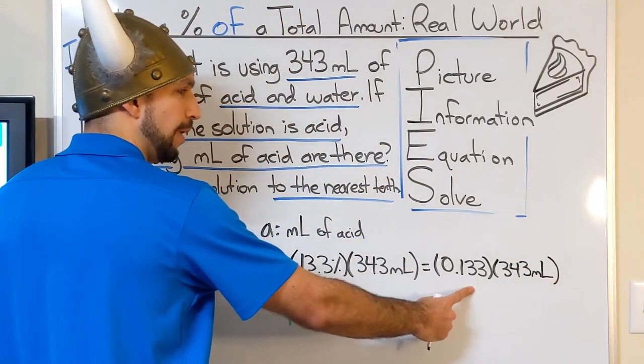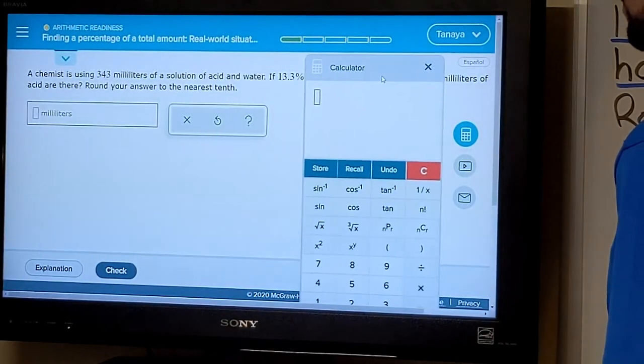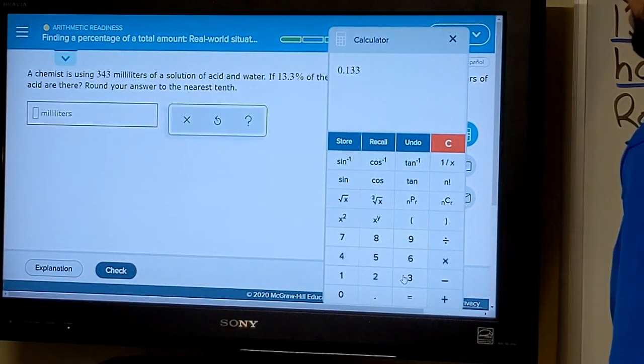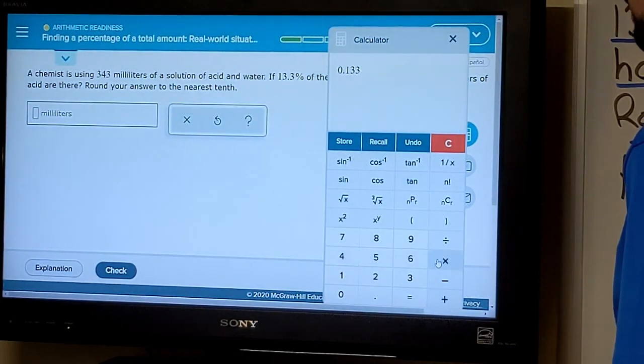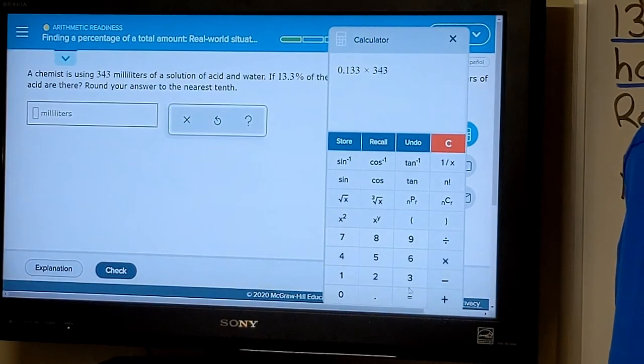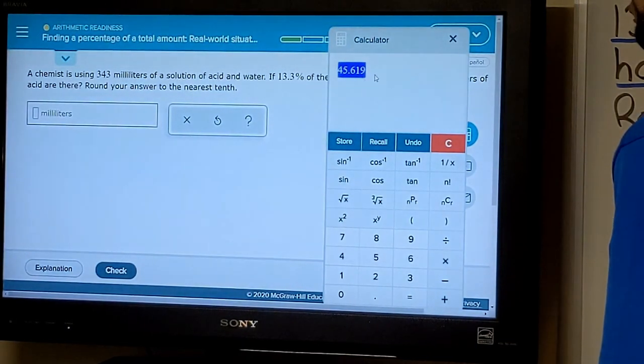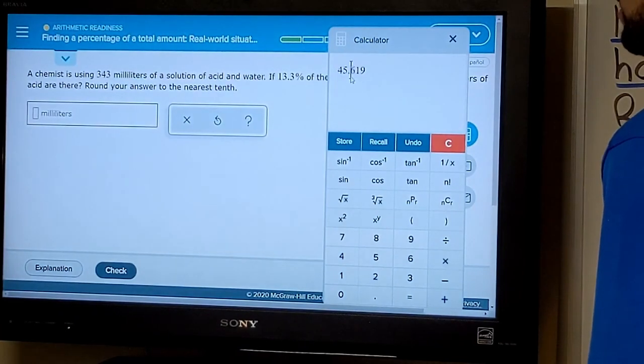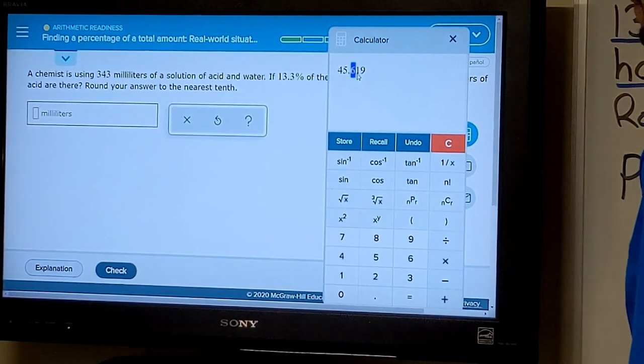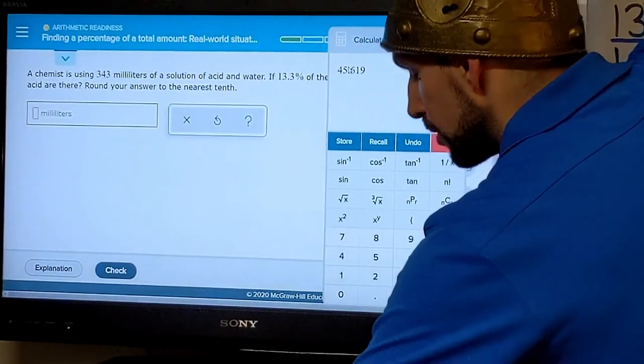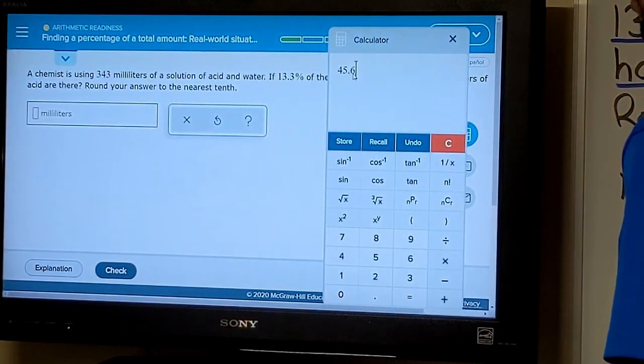And then we can plug this into our ALEX calculator. So opening up our calculator, we had 0.133 as the decimal representation of 13.3%, and then that was of our whole solution, which was 343 milliliters. We press the equals button. Here's our solution, but it's not rounded to the nearest tenth. So we'll need to round this to the nearest tenth. The tenth digit is right here, so we'll look to the right. This is not five or greater, this is four or less. So we're going to round this down to 45.6 and take off these extraneous digits.